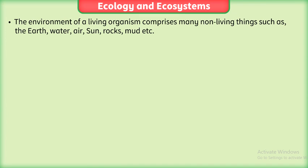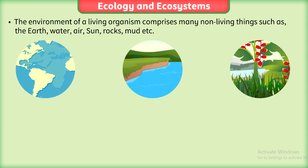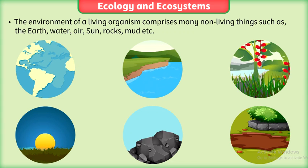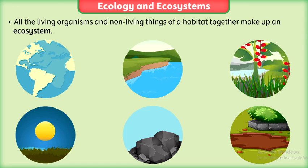The environment of a living organism comprises many non-living things such as the earth, water, air, sun, rocks, mud etc. All the living organisms and non-living things of a habitat together make up an ecosystem.